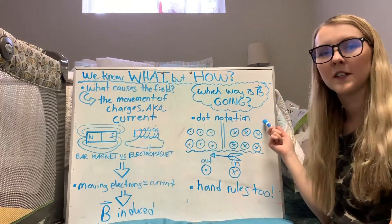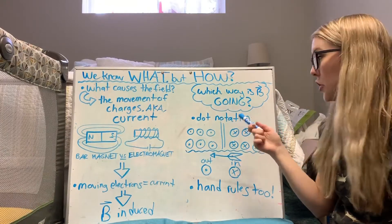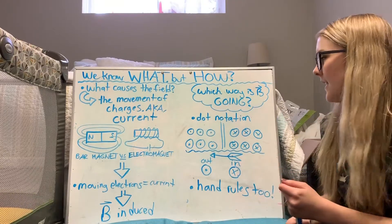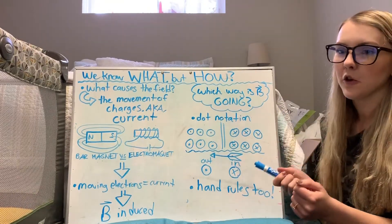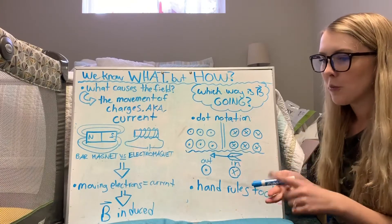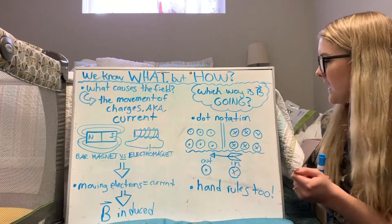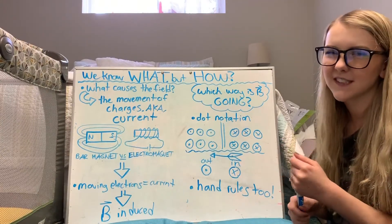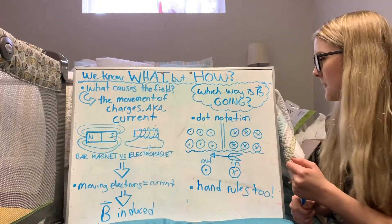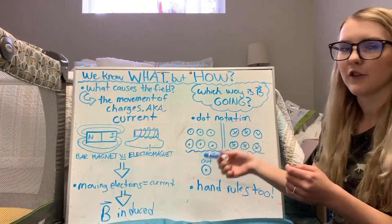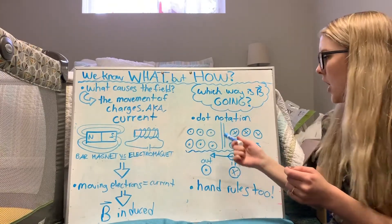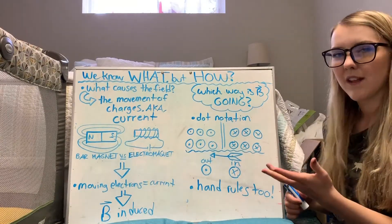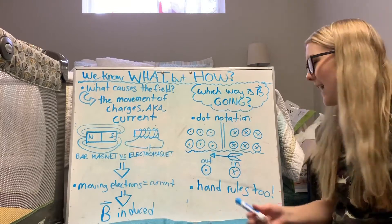And then the next thing I want to talk about is dot notation and how we can tell which direction the field is moving in. So dot notation is super important for exams and homework assignments. It's very very popular in any physics, like early physics class that you're learning about magnets in. So basically it'll have a circle with either a dot or an X in it and the dot and the X indicates the direction in which it's going.